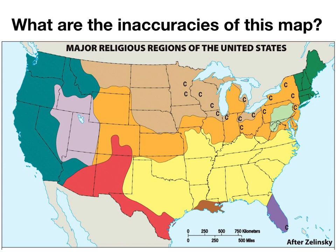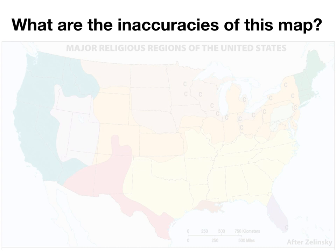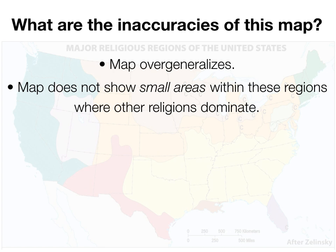The next question is: what are the inaccuracies of this map? What does this map get wrong? Even though this map is quite useful for showing the overall distribution of religion in the United States, it is not 100% accurate. This map overgeneralizes — that's the first inaccuracy. It overgeneralizes religious distribution and does not show small areas within each region where other religions dominate. There are quite a few more religions in the United States besides the ones listed.